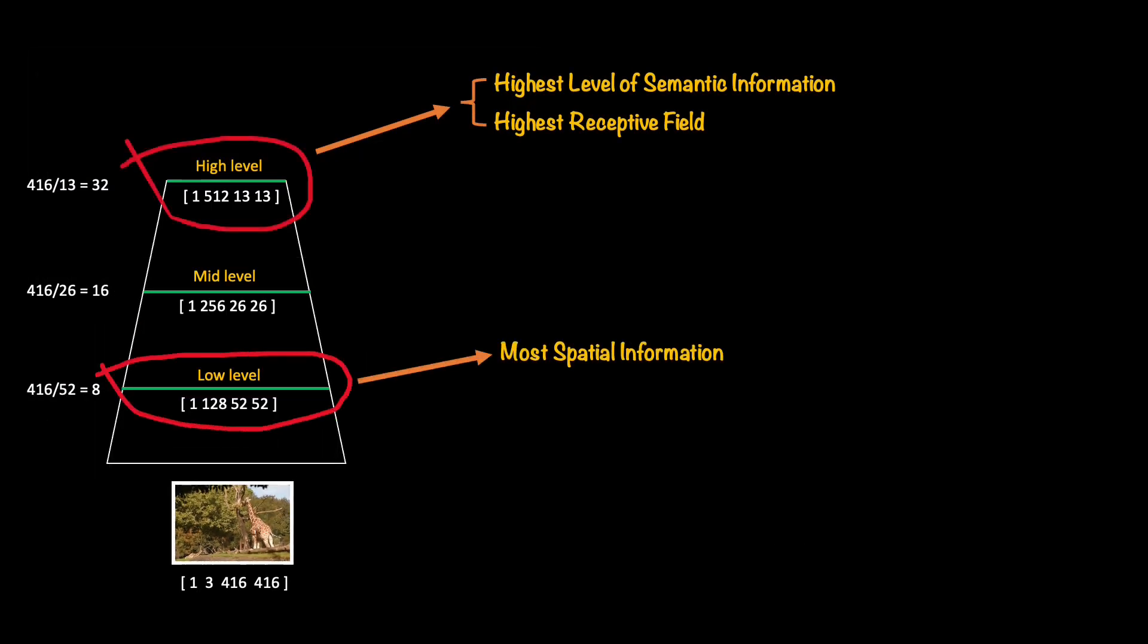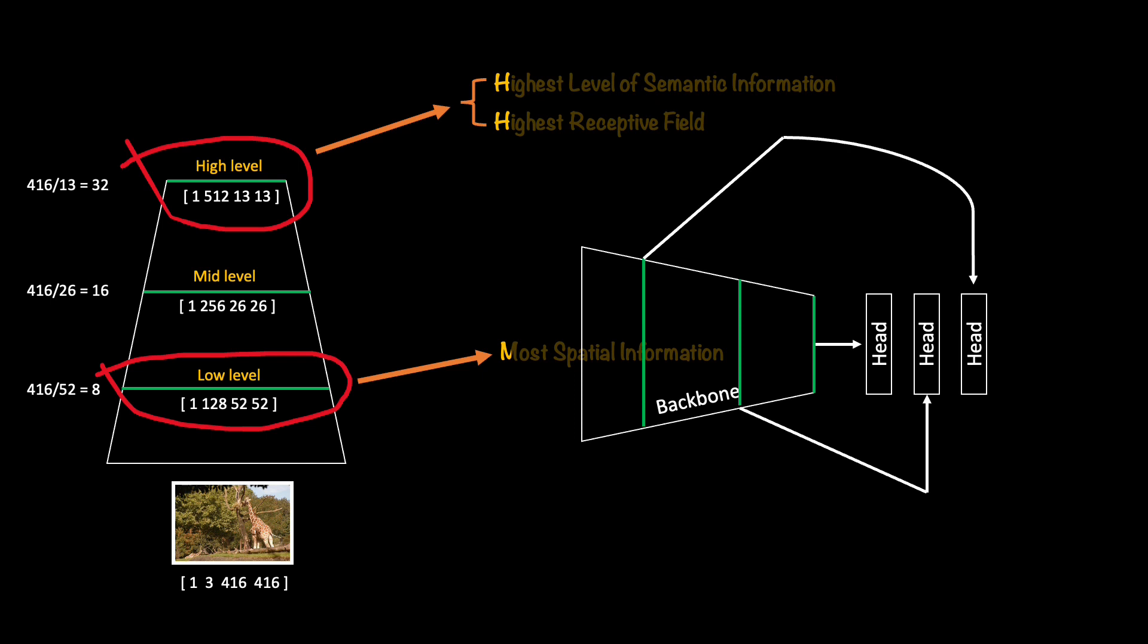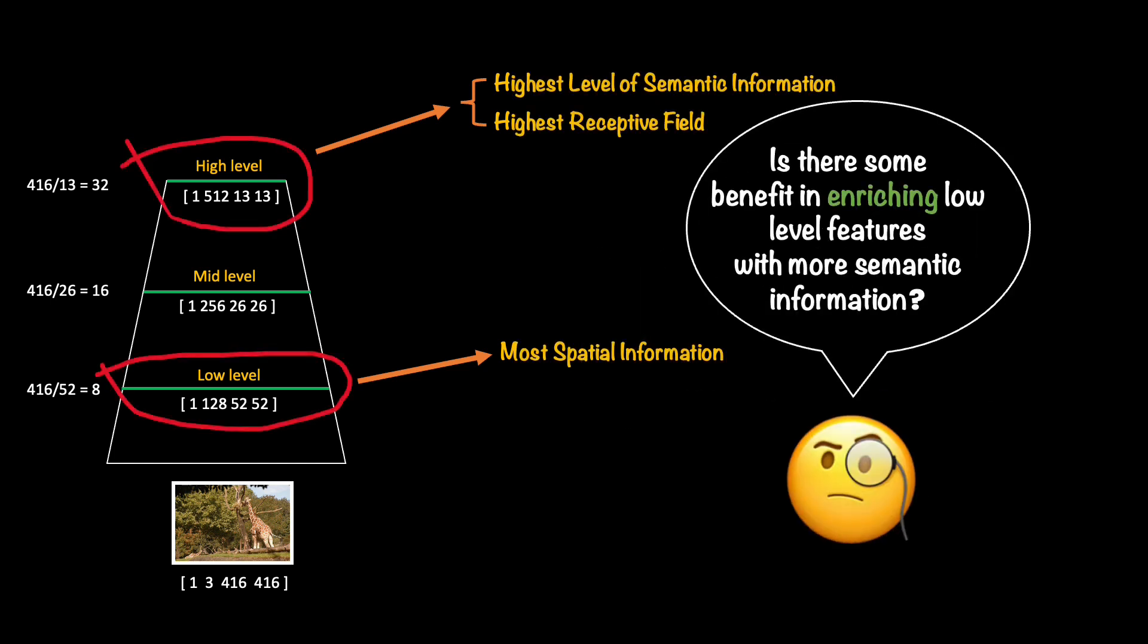Interestingly, while the low level features would capture less amount of semantic information, they would capture more spatial information. Please note my usage of highest and lowest. I am not saying that the low level features or mid-level features are not capturing semantic information. They are, but not as much as the deeper layers in your neural network would do. Now that we have this awareness about the characteristics of these features from various stages, we can start to see that the head for mid-level and the head for the low level features are kind of missing the semantic information that could help them do a better job at detecting the objects. Again, they do have semantic information, but not as much as the high level feature map would have. And so we wonder what if we could enrich the features at various stages from the semantic information captured at the deeper layer.